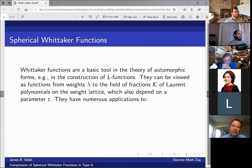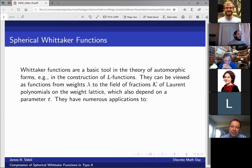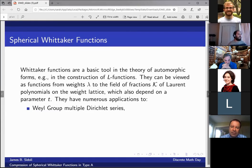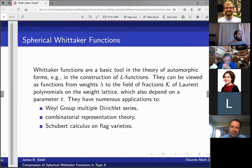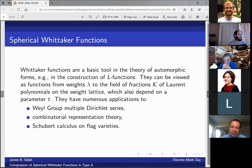Spherical Whitaker functions show up in number theory, in the theory of automorphic forms, for example in the construction of L functions. They can be viewed as functions from weights lambda into the field of fractions of Laurent polynomials on the weight lattice, and they have applications to Weyl group multiple Dirichlet series, combinatorial representation theory, and Schubert calculus on flag varieties. These formulas for the spherical Whitaker function can all be connected via this phenomenon called compression, and I want to define that rigorously here.